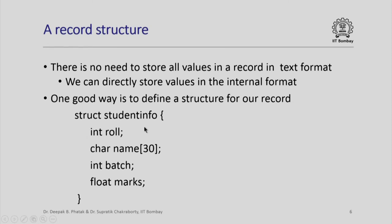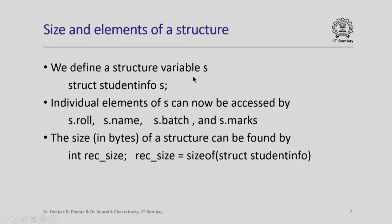Here is one good way of defining a structure. We say struct student_info and define these four elements: int role, char name[30], int batch, float marks. Notice that this structure struct student_info acts like a new type. It is now possible to define a structure variable s by saying struct student_info s. Individual elements of s can then be accessed as s.role, s.name, s.batch and s.marks.